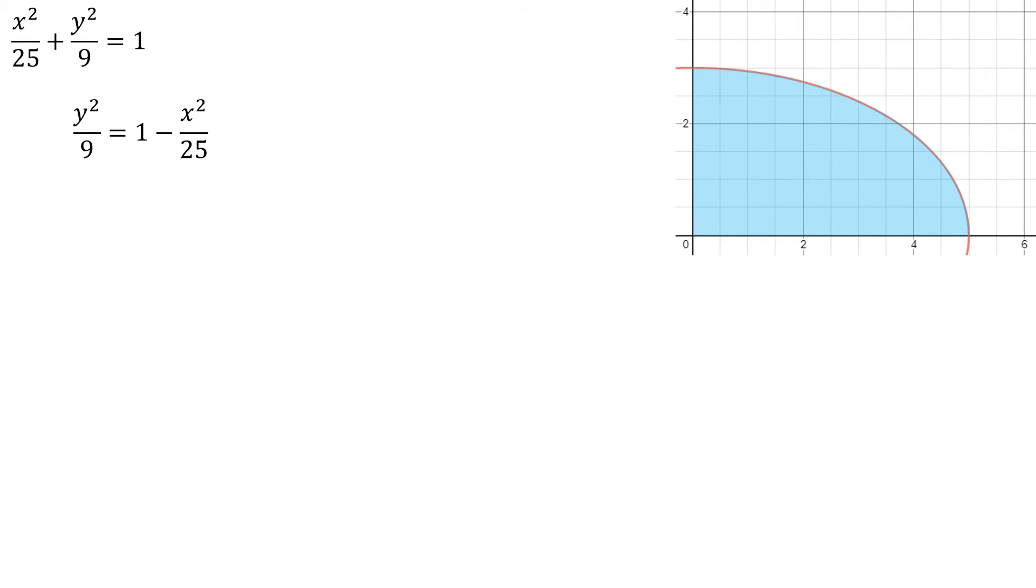Well, better solve for y. So I'll subtract x squared over 25 from each side. Multiply both sides by 9. Take the square root. And so there is an equation for y. Notice I did not put the plus or minus in front of the square root symbol because I'm only considering the curve that's above the x-axis, not the curve below the x-axis.